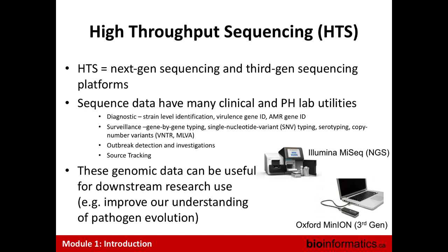Sequencing data has many laboratory utilities: detailed strain-level identification, identification of virulence genes and AMR genes from sequence data alone, surveillance through gene-by-gene or SNP-based approaches, in-silico serotyping to predict serotype from genomic data, and identification of copy number variants. That information can then be used for outbreak detection and investigation — trace-back and transmission route analysis — combining sequence data with epidemiological investigation.